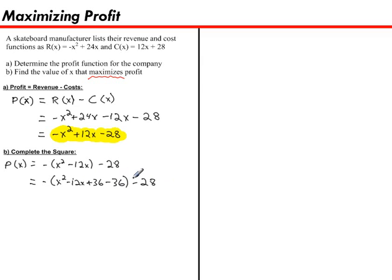Next, I'll bring the negative 36 outside of the bracket, but before I can do that, I have to multiply it by whatever is in front of that bracket. So what's in front of the bracket? There is a negative 1. Negative 1 times negative 36 makes it positive, plus 36, and I keep the minus 28.